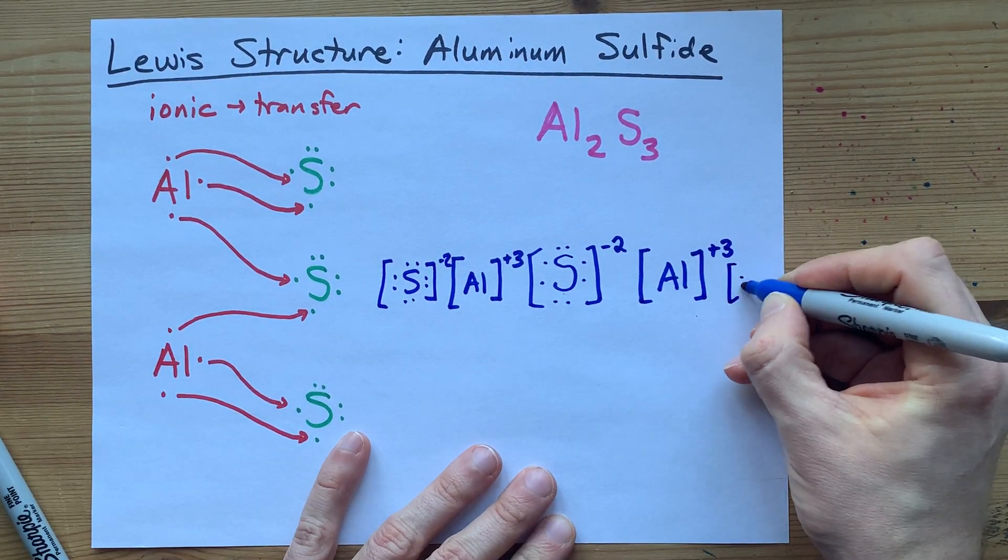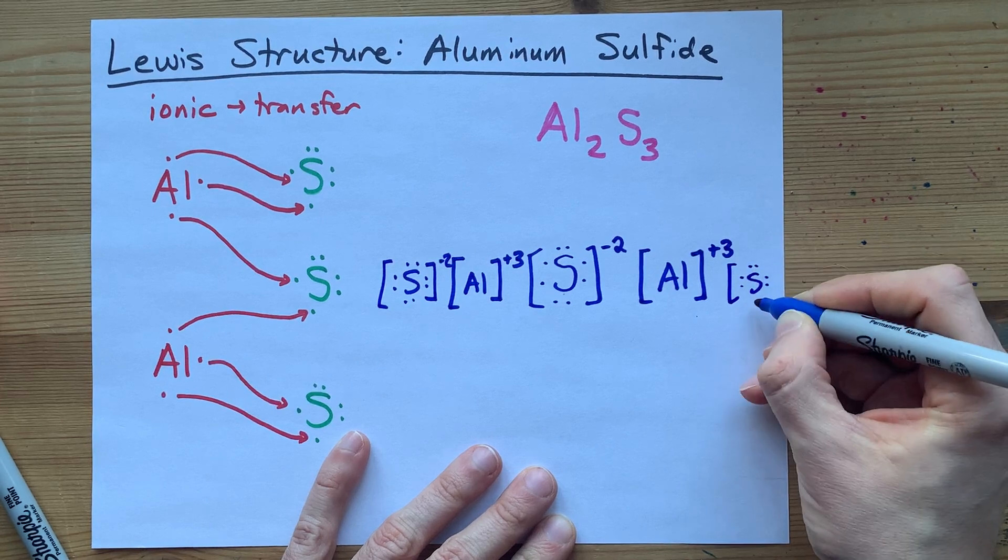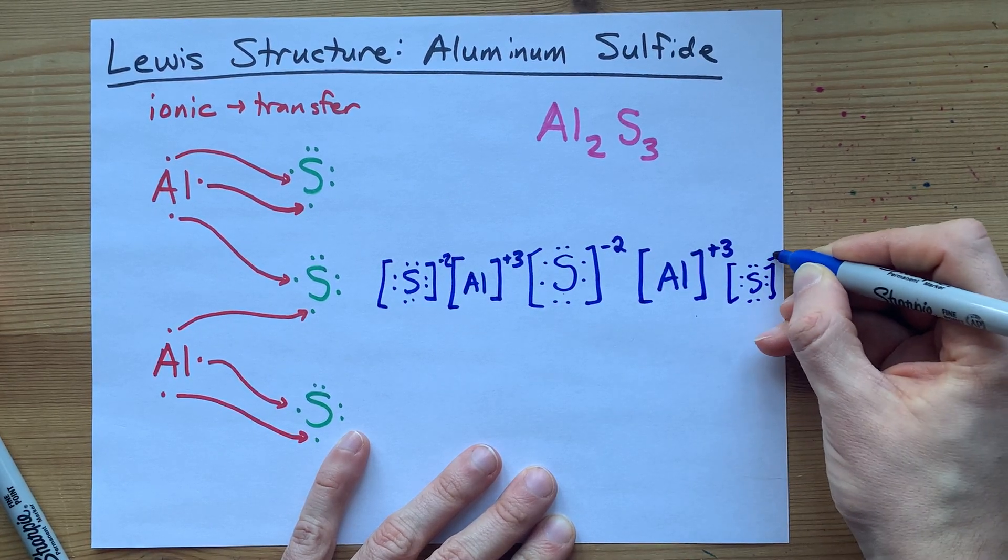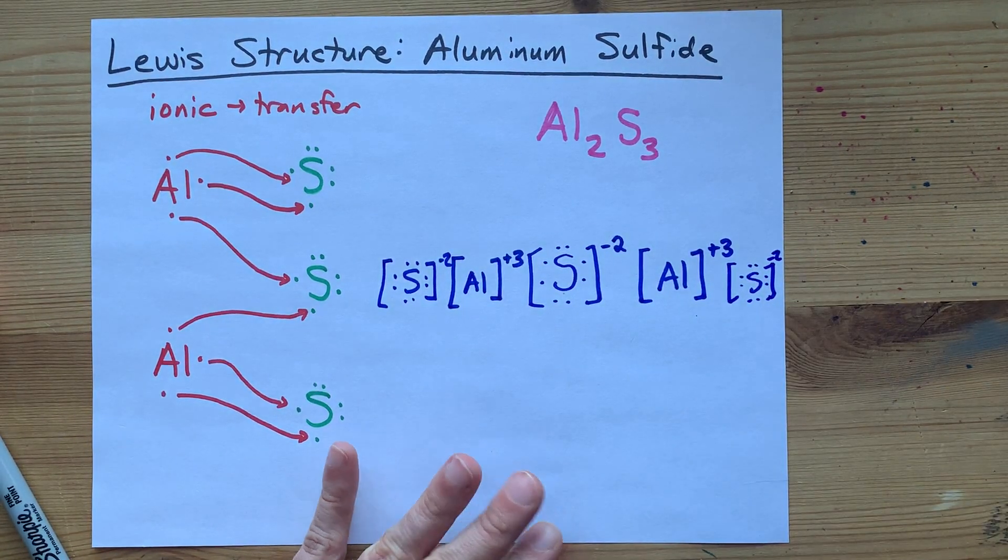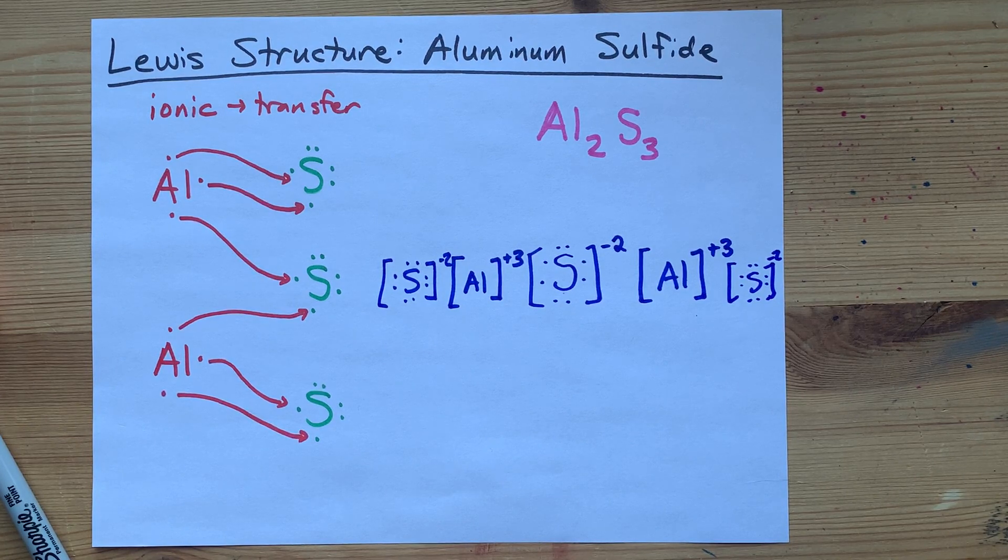I don't know if I can fit one in here. I should have planned that better. Oh, that's minus two charge. There's your completed Lewis structure for aluminum sulfide.